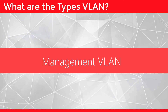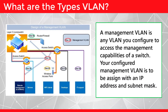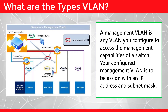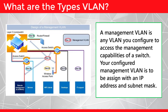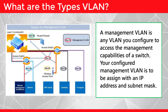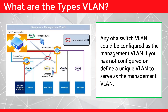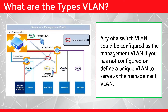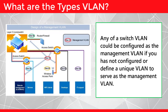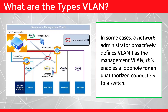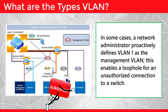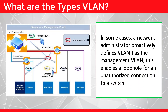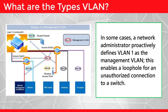Management VLAN: A management VLAN is any VLAN you configure to access the management capabilities of a switch. Your configured management VLAN is to be assigned with an IP address and subnet mask. Any of a switch's VLANs could be configured as the management VLAN if you have not configured or defined a unique VLAN to serve as the management VLAN. In some cases, a network administrator proactively defines VLAN1 as the management VLAN, which enables a loophole for an unauthorized connection to a switch.